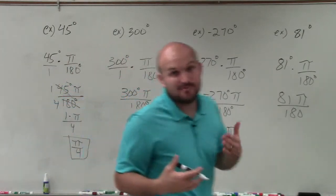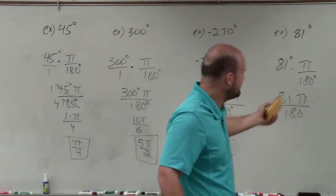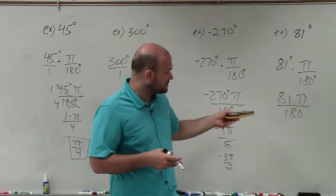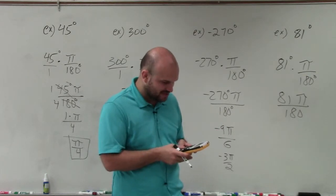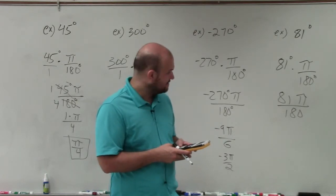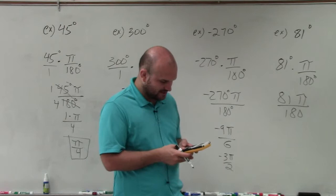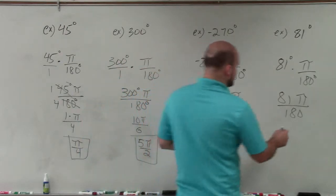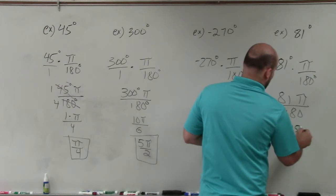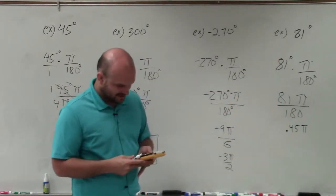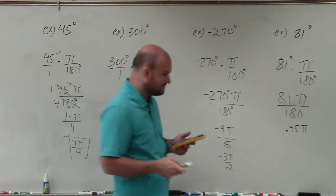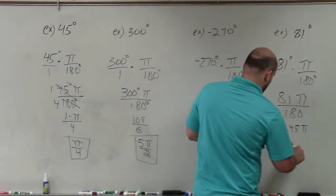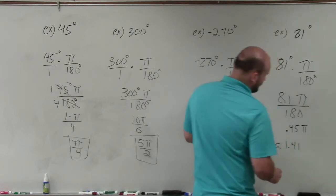However, sometimes we might want to rewrite, if we still want to write this in radian form, we could leave it like this. Or we could actually represent this as a decimal. So I do 81 divided by 180, which would be 0.45. So we could do 0.45 pi. Or we could multiply those together, and then round it to approximately 1.41 radians.